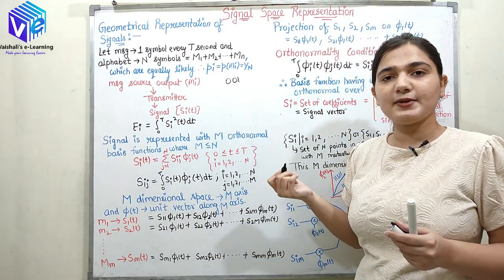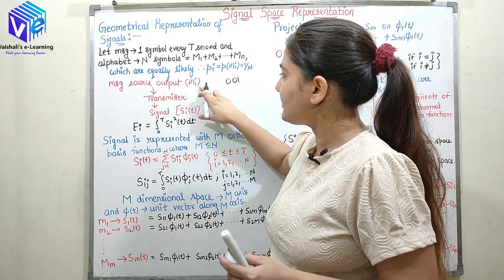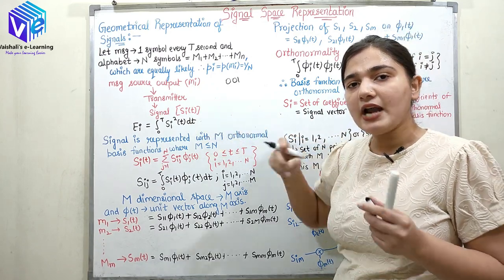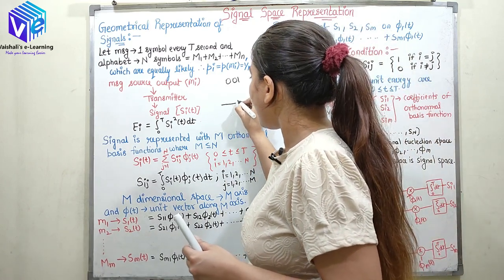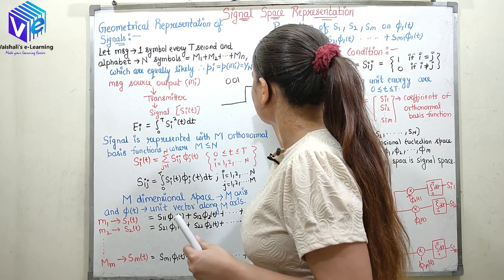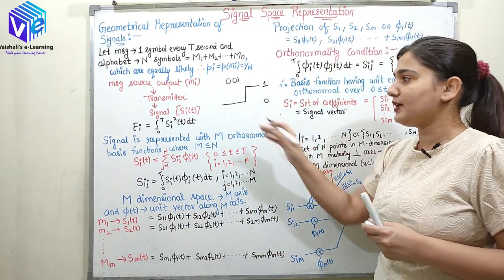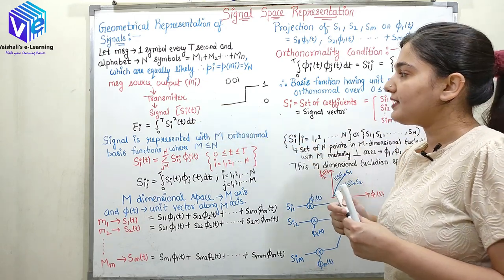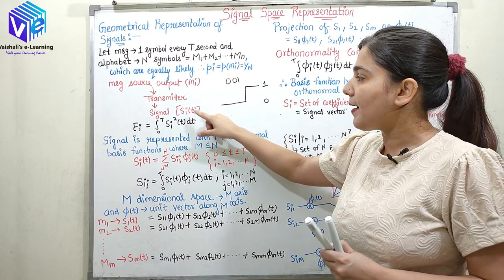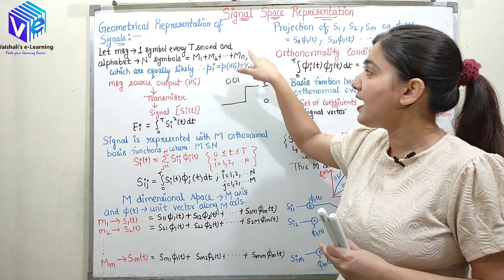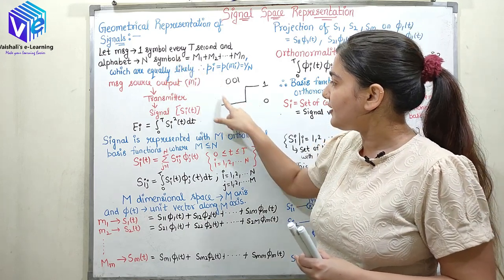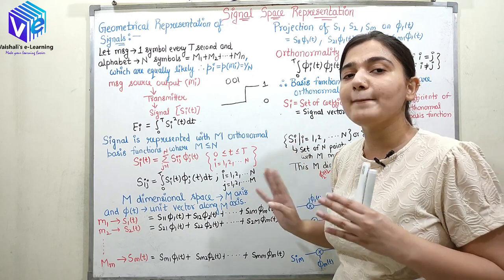So now how can I represent 001? This 001 is represented as a message. Message will go to the transmitter and transmitter will convert it into a signal, and this signal will go to the channel. Here 0 can be represented with voltages — 0 is represented by 0 and 1 is represented by voltage 1. Now I have encoded it into a signal and this signal is now a signal vector. I'll be having some signal vectors depending upon my alphabet — n symbols representing n signals.